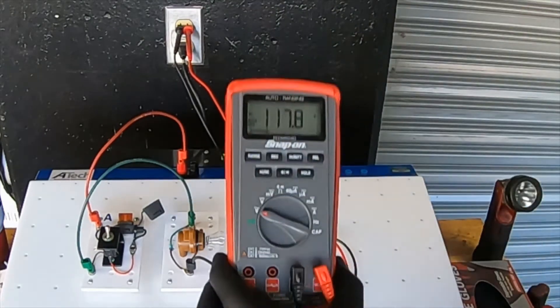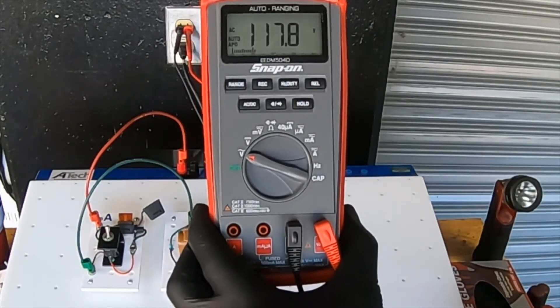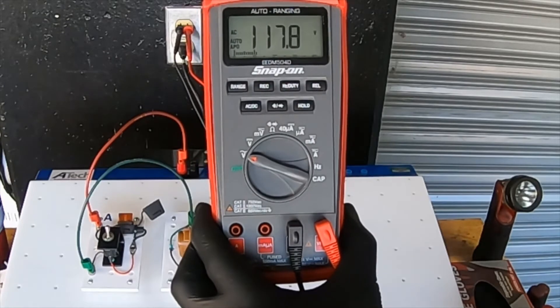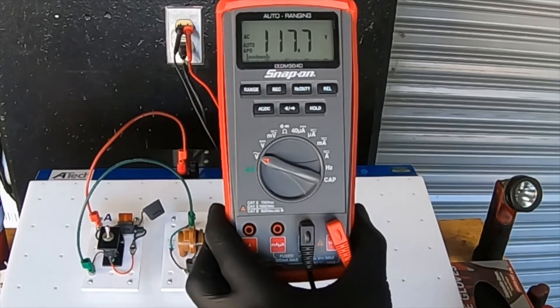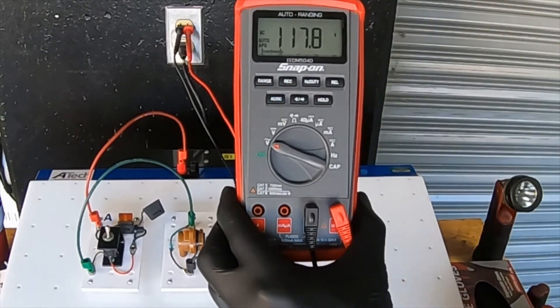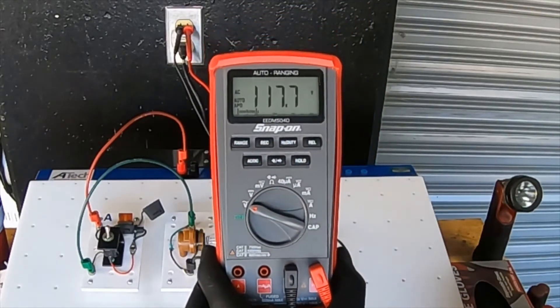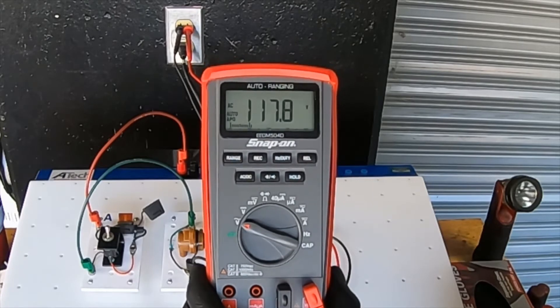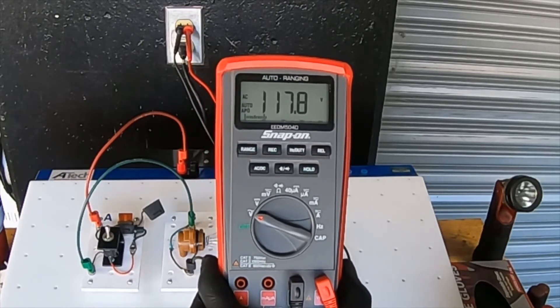And now I have an AC voltage reading. So that outlet is producing 117.8 volts. Notice I did not have to make any decisions. It just reads the correct range. So that is a big benefit of using an auto-ranging meter when you are first starting out - it selects the correct range for you.